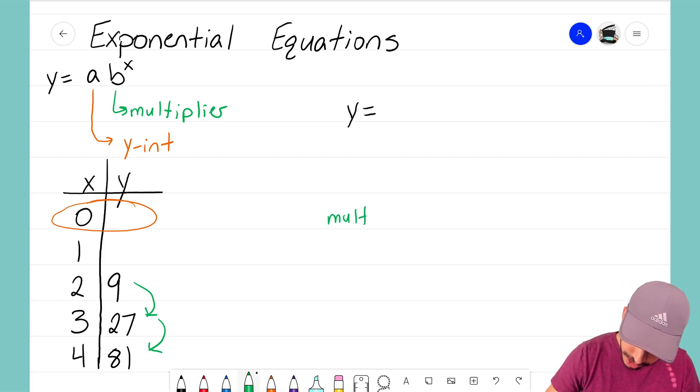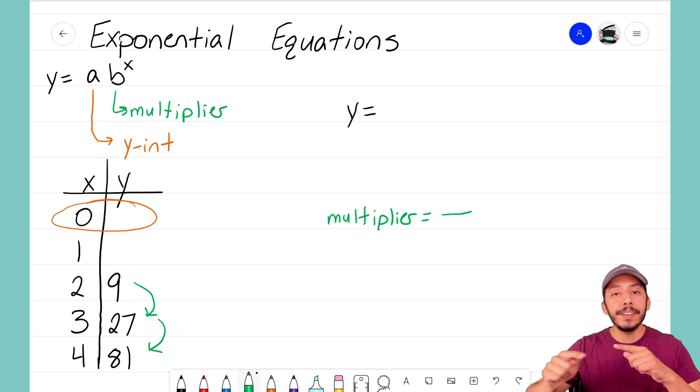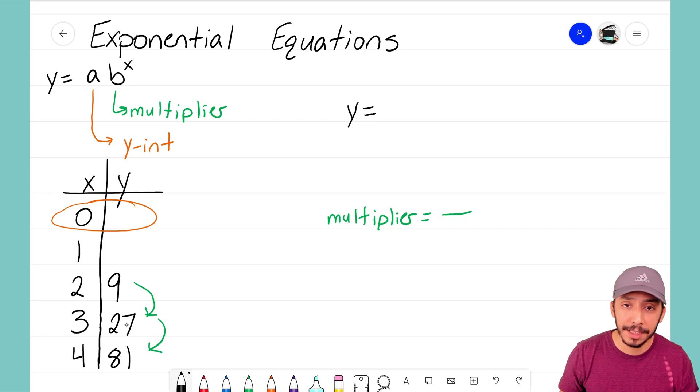To find the multiplier, what we want to do is pick one of the terms in our table, one of the outputs, and divide it by the previous term. So you're going to pick an output on your table and divide it by the one that comes before it, because that will tell you what your multiplier is. For example, if I wanted to choose 27 as the term that I'm looking at, I would take 27 and divide it by the term before it, which is 9.